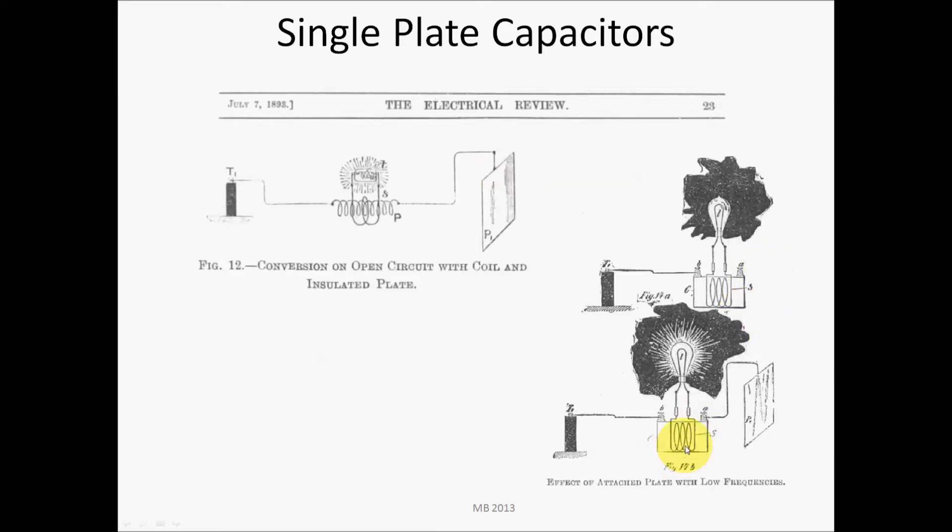There's a few other illustrations from Electrical Review that was published in 1893 with information that Tesla supplied on some of his power transmission schemes. You see here where the high-frequency power source is going through this type of transformer where the light bulb is coupled in.